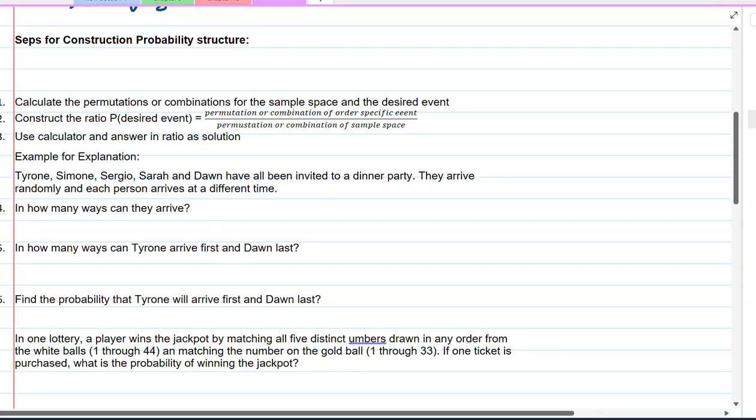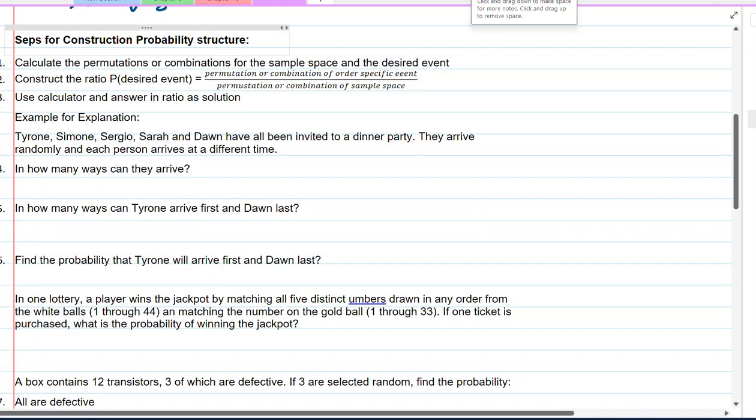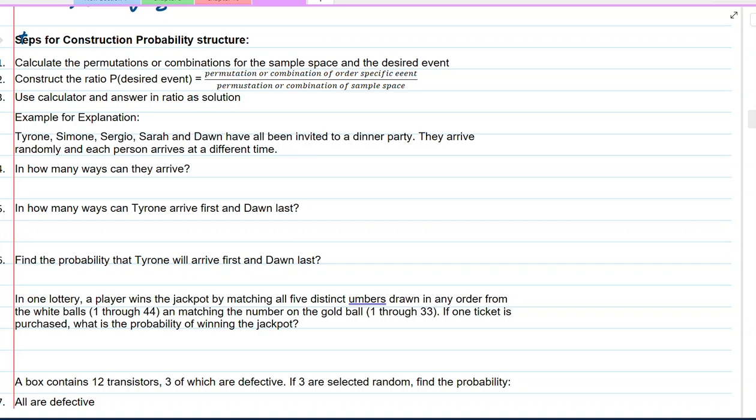Here we're going to be using our calculator quite a bit because the numbers are large. Steps for construction of probability structures. First, we have to calculate the permutations or combinations of the sample space and the desired event. These are two distinct actions. Then we construct the ratio of the probability of the desired event, permutation or combination of the order-specific event, and permutation or combination of the sample space. Use calculator and answer in ratio as a solution, and sometimes if they're very large we will give a number, but primarily they are fractions.